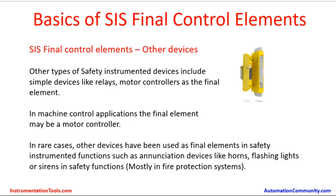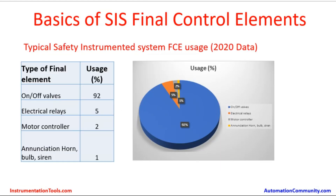There are other devices used as SIS final control elements. Other types of safety instrumented system devices include simple devices like relays and motor controllers as final elements in machine control applications. In rare cases, other devices have been used as final elements in safety instrumented functions, such as annunciation devices like horns, flashing lights, or sirens. Most of these will be in fire protection systems, using a simple relay which gets power from the digital output module of the safety instrumented system.